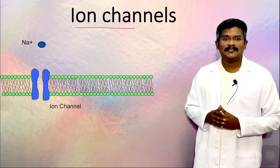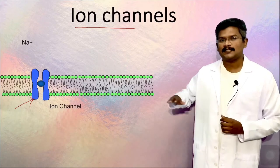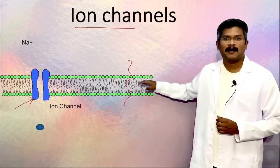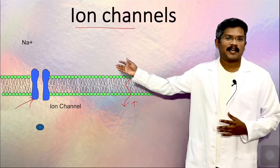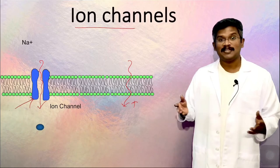Ion channels are transmembrane proteins through which ions pass. The resistance for ion movement across a lipid bilayer is very high. These ion channels provide an aqueous environment where the resistance is low and allow millions of ions to move through in a second.